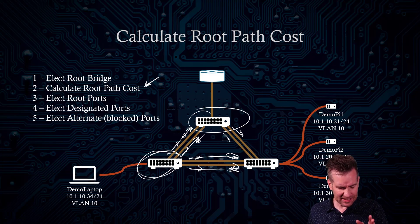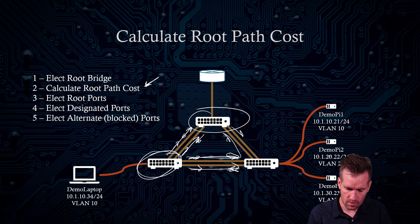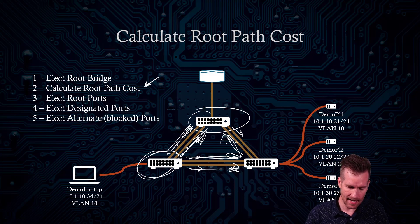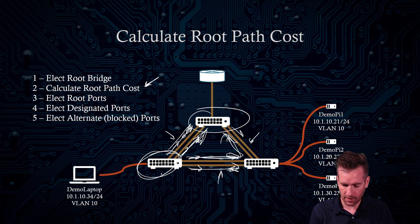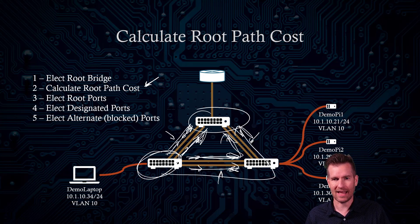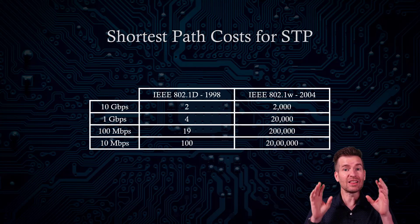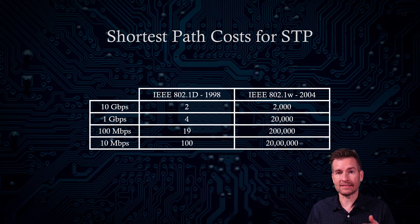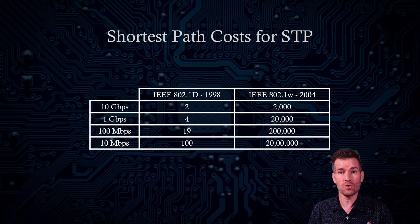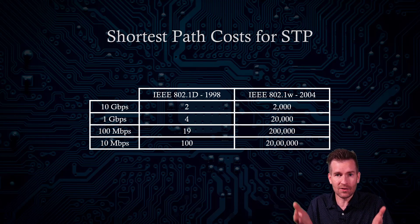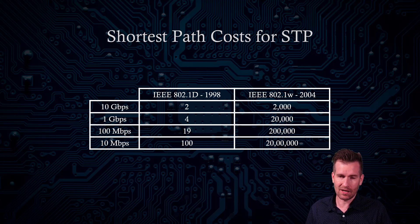At first glance it looks like it would choose the directly connected route, but that's not necessarily the case. What if that direct connection is a 100 megabit connection and the other paths are gigabit connections? Then it would actually prefer to go the longer way. There are many different standards for calculating cost, and you can even specify your own, but it must be consistent across your network — different standards across switches will cause problems.